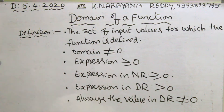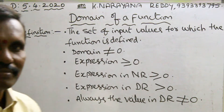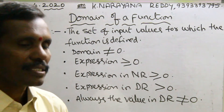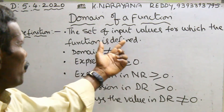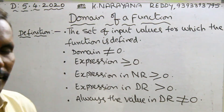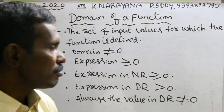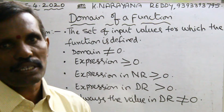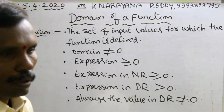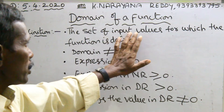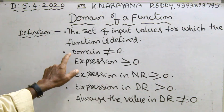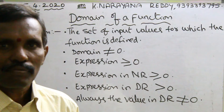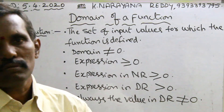The set of input values — those are natural numbers, or integers, or whole numbers, or real numbers, whatever it may be — the set of input values for which the function is defined. You are substituting values in the place of x, in the place of the variable. Second point: domain not equals to zero, which contains some value.